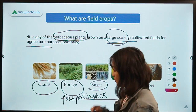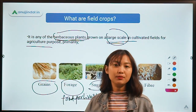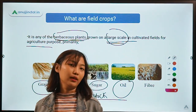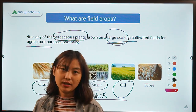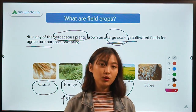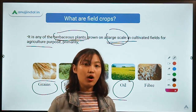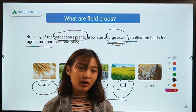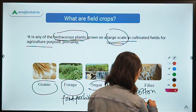Coming to sugar, the plants or crops which are grown to get byproducts as sugar — we have examples like sugarcane and sugar beet. For oil, the plants which are grown for oil purpose from where we can extract the oil — examples would be mustard, groundnut, sunflower, safflower, sesame, and so on. And lastly, we have fiber crops. Fiber crops are the ones from where we can extract the byproduct as cloth. Examples are cotton as well as jute — these are the most commonly used fiber crops.